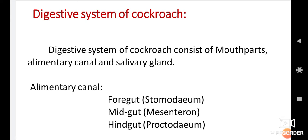The Digestive System of Cockroach consists of mouth parts, alimentary canal, and salivary glands. The alimentary canal is a tube divided into three major parts: foregut, midgut, and hindgut. Foregut is called stomodeum, midgut is called mesenteron, and hindgut is called proctodeum.